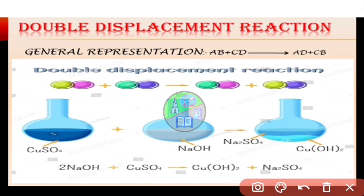Next is double displacement reaction. A chemical reaction in which two compounds react by exchange of ions to form two new compounds is called a double displacement reaction. Its general representation is AB + CD → AD + CB. For example, sodium hydroxide when reacts with copper sulfate gives copper hydroxide and sodium sulfate.